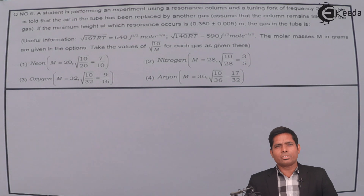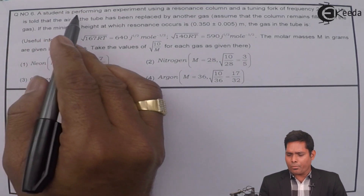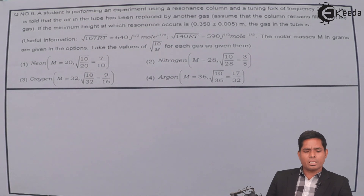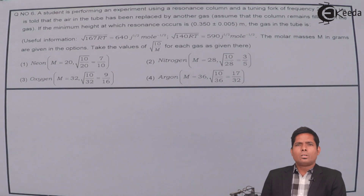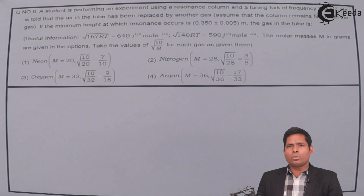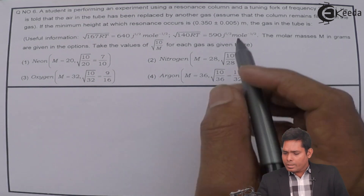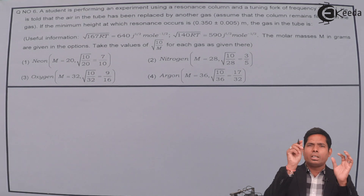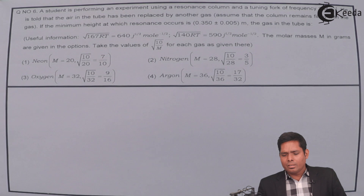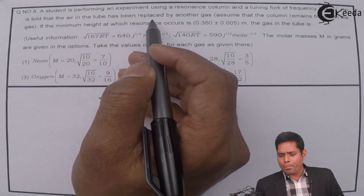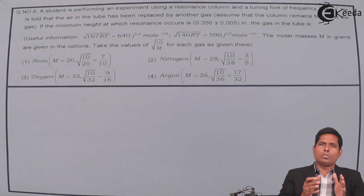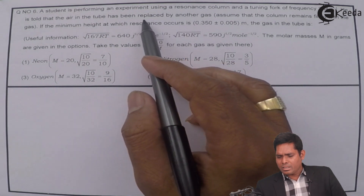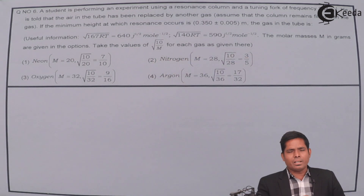Let us solve question number 6. The question says: a student is performing an experiment using a resonance column to find the velocity of sound in air. A tuning fork of frequency 244 Hz is used. He is told that the air in the tube has been replaced by another gas.